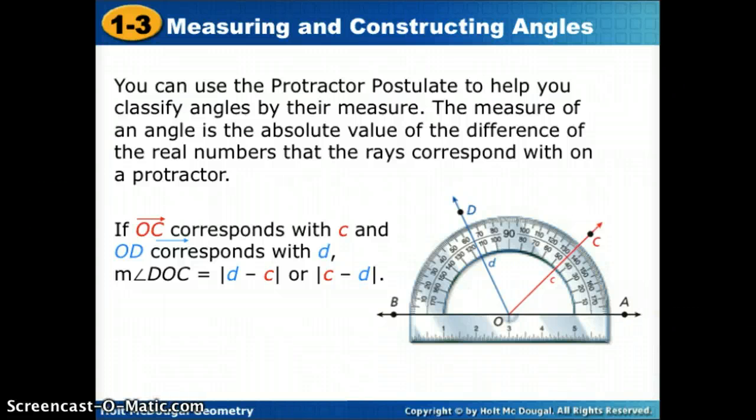If we want to use the protractor postulate to give an angle a measure, just like you would use a protractor, you'd line one of the rays on the side of the protractor and use the second ray to figure out its measure. So wherever C hits on the angle gives us the measure for that angle.